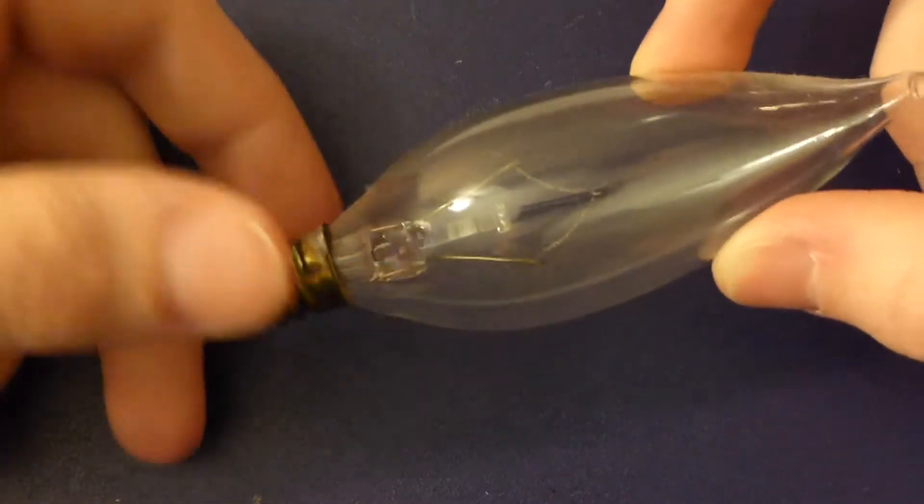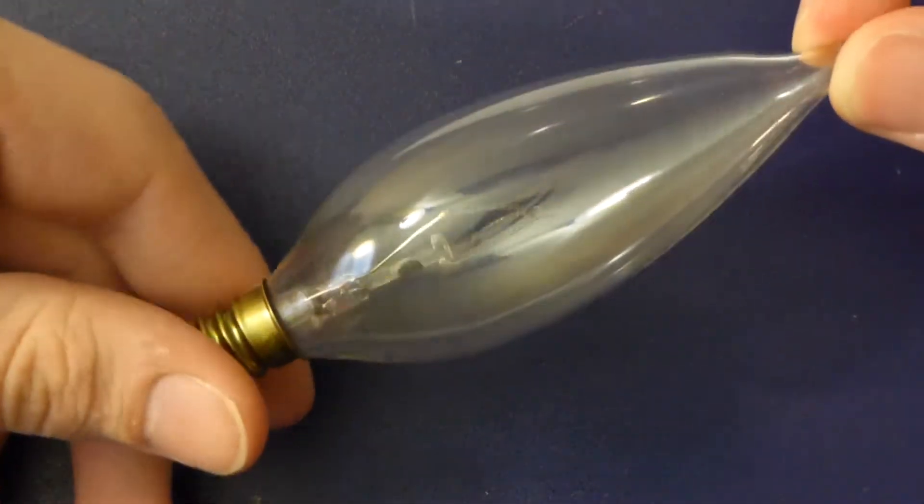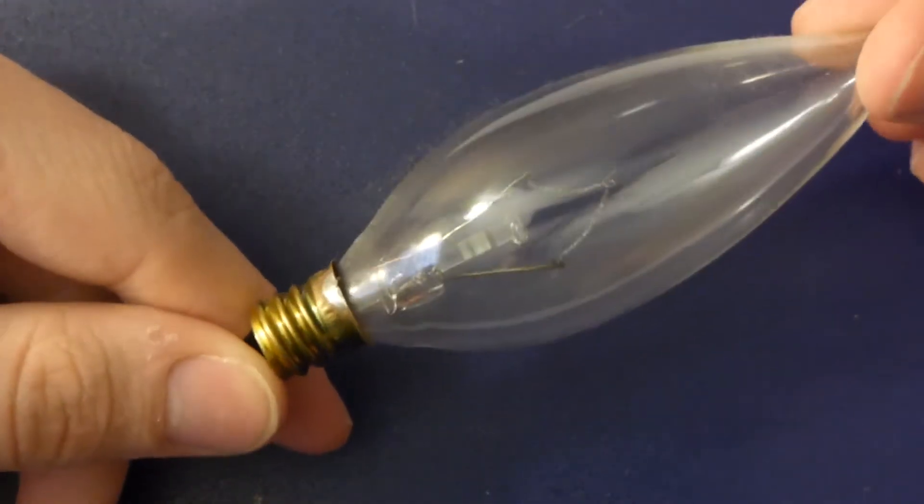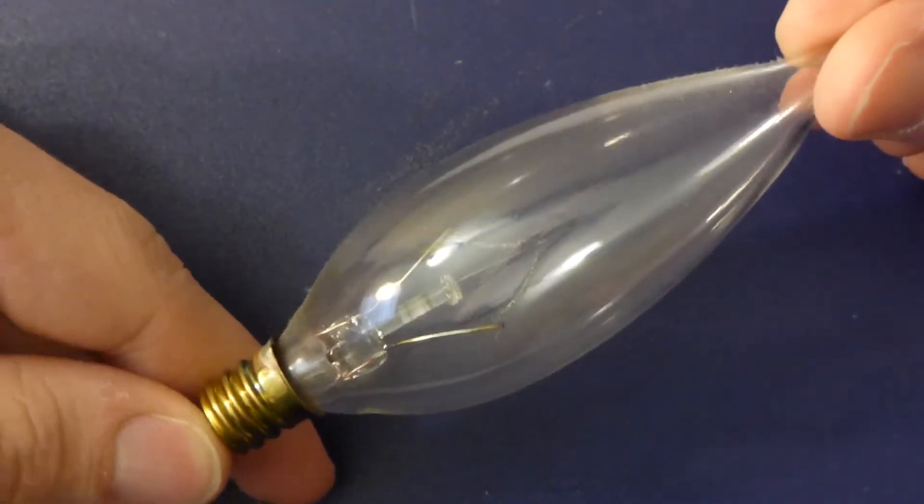Howdy folks, so I've recently got into the whole energy-efficient lighting craze. However, it's been kind of challenging for me, at least at first, because most light bulbs in my house are this type: the E12 Edison screw candelabra base.